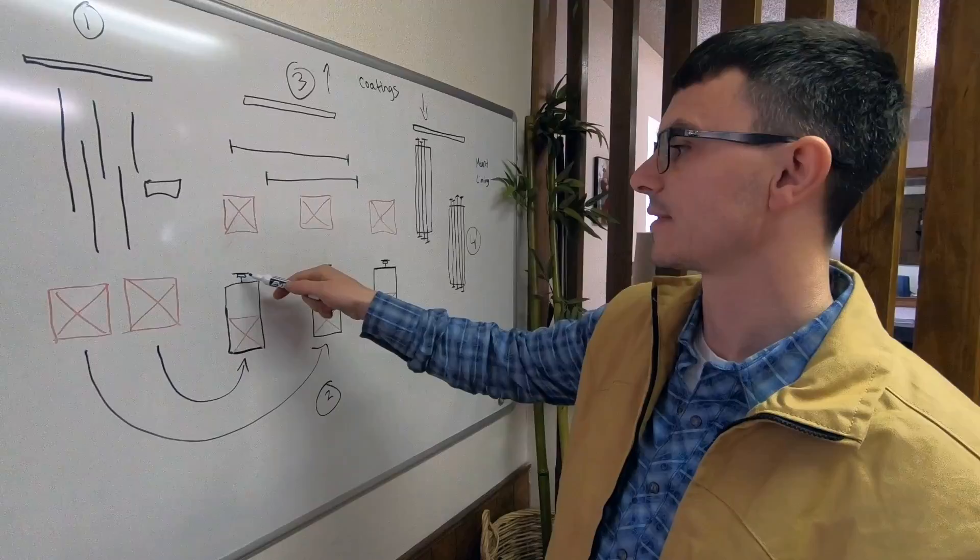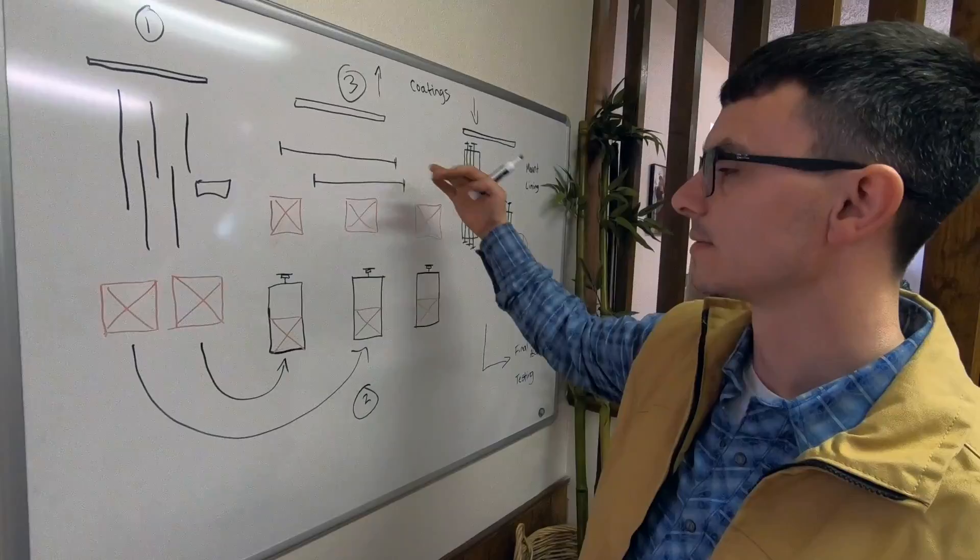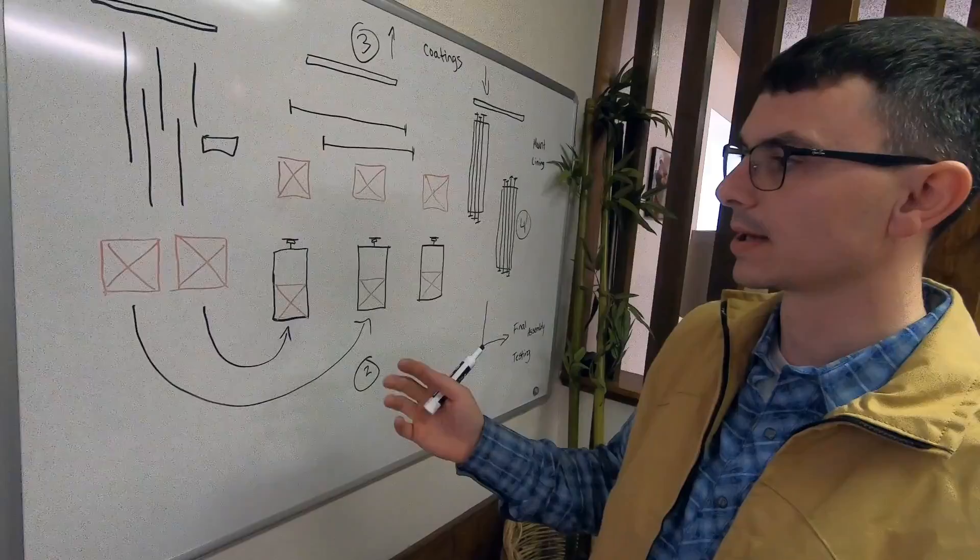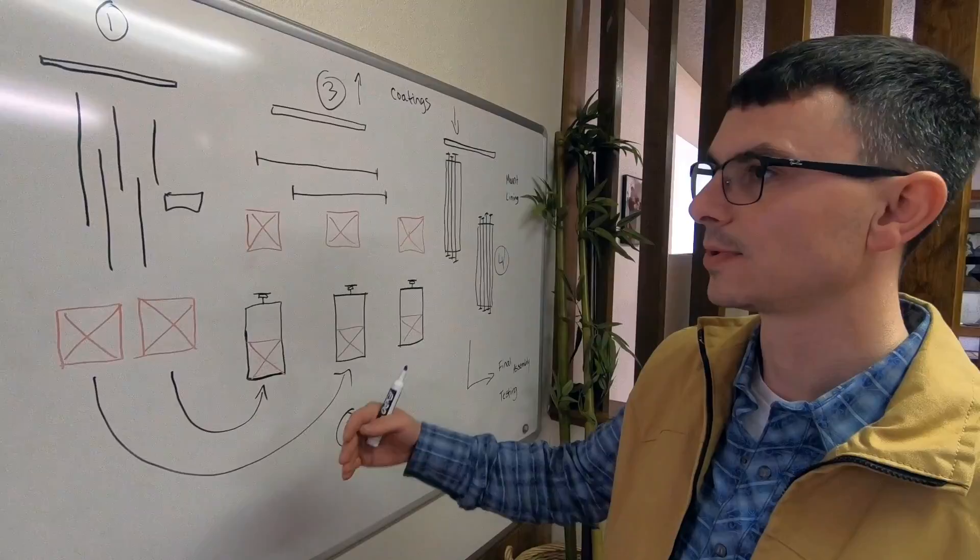And then with each spool, there's a piece of paper that follows it along. So anybody who's working on it knows what the spool is, what the measurement should be, what it's for, all that. So they just grab the pipe, they grab the piece of paper, and they know what they're doing.